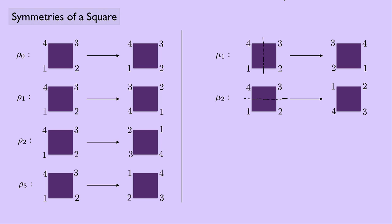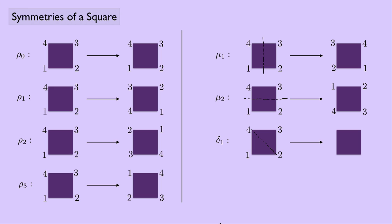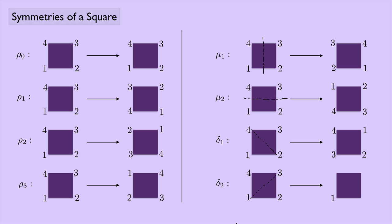The last basic operation is flipping about a diagonal, which I'll denote with δ. δ₁ flips about the diagonal joining 2 and 4: the 2 and 4 stay fixed while 1 and 3 swap. δ₂ flips about the other diagonal joining 1 and 3: the 1 and 3 stay fixed while 2 and 4 switch places.